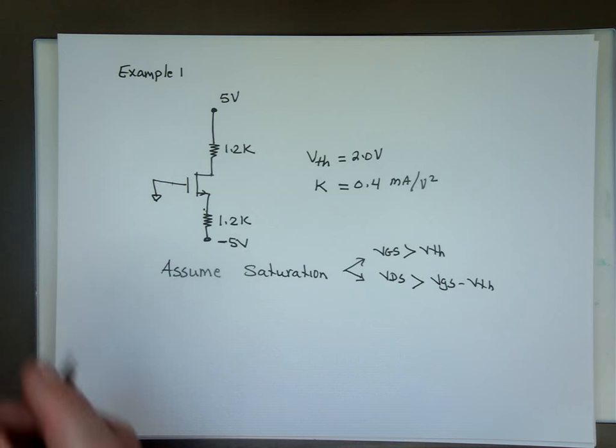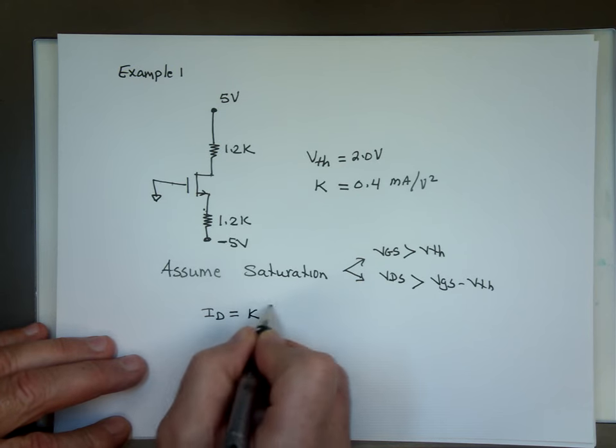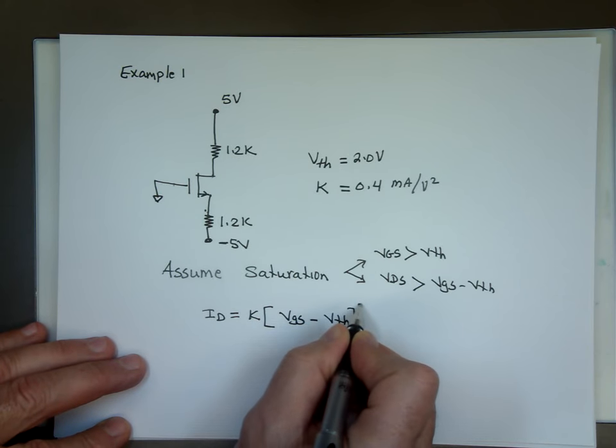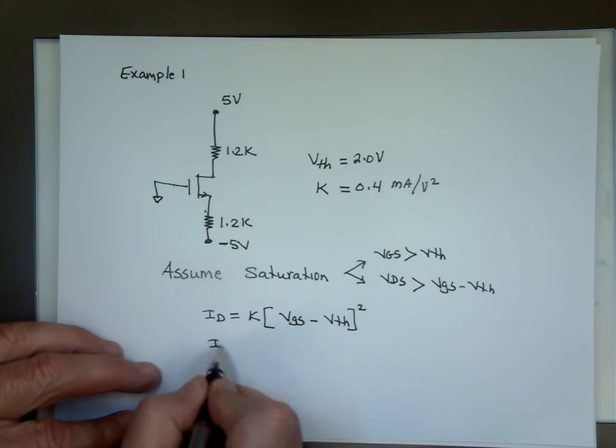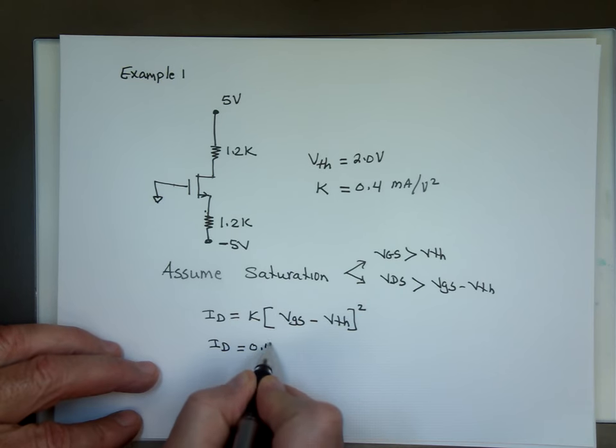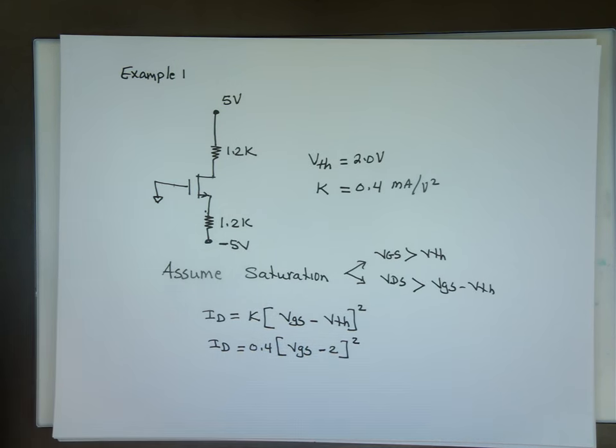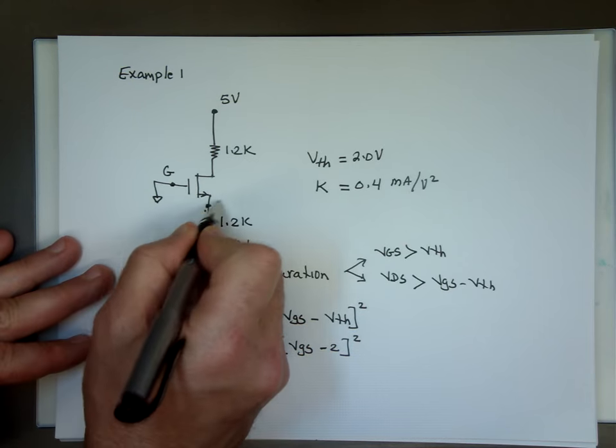Let's begin. If I'm in saturation, we said the current I sub D is supposed to equal K times what? VGS minus V threshold squared. Well, in this example, V threshold is two and K is 0.4 squared. It depends which direction I go. I'm going to end up with a quadratic equation either way we slice it. But if this is VGS here, this is G, this is S, this is GS.